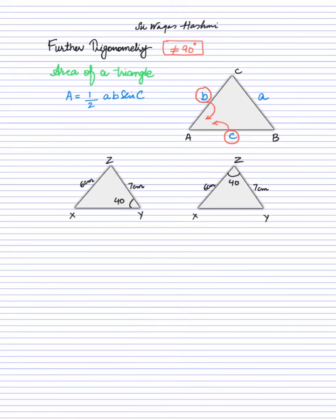You can observe these two examples. The dimensions are the same: 6, 7, and the angle is 40. But if you consider this triangle XYZ, the angle between these two sides is missing, so you cannot apply this working formula on that triangle.